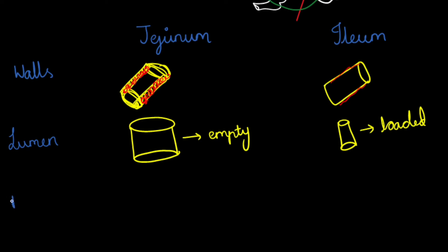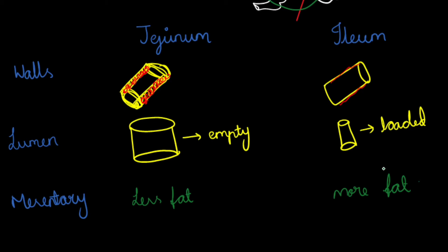Regarding the mesentery — which is the attachment of the peritoneal membrane — in the jejunum we can see very less amount of fat, while in the ileum we can see more amount of fat compared to the jejunum. So these are the first three comparative features: jejunum has thick wall with high vascularity, wide lumen so always empty, and less fat in the mesentery; ileum has thin wall with low vascularity, narrow lumen so always loaded, and more fat in the mesentery.